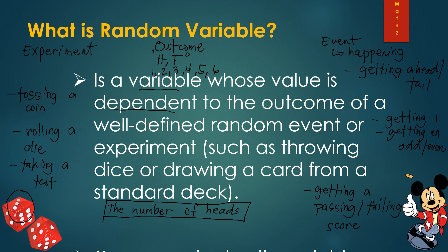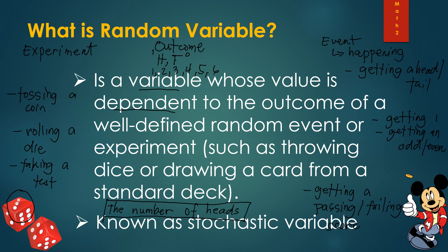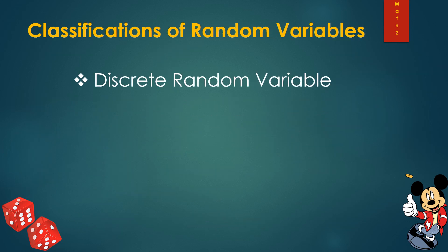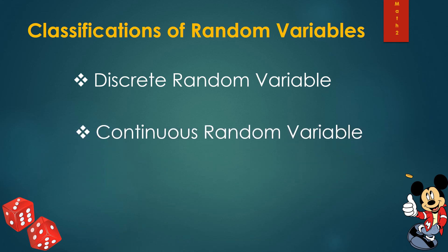Random variables are also known as stochastic variables. They are classified into two types: discrete random variable and continuous random variable.